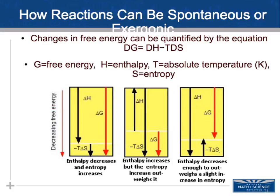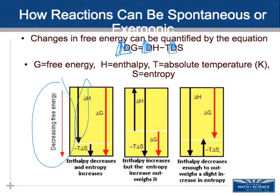Looking at how a reaction can be spontaneous or exergonic — using the Gibbs equation, all deltas should be triangles. G is free energy, H is enthalpy, T is absolute temperature in Kelvin, S is entropy. On these diagrams: decreasing enthalpy plus increasing entropy still gives a decrease in free energy overall. When enthalpy is increasing but the increase in entropy outweighs it significantly, there is still an overall loss of free energy.